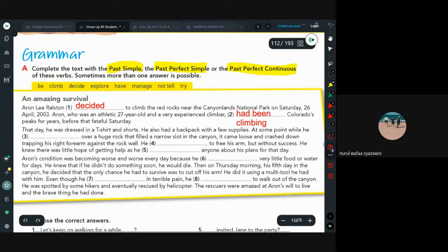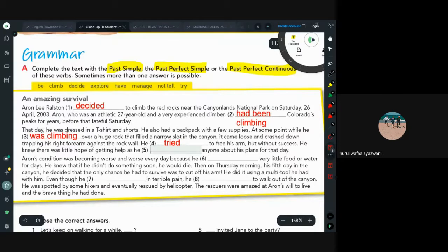That day he was dressed in a t-shirt and shorts. He also had a backpack with a few supplies. At some point while he was climbing over a huge rock that filled a narrow slide in the canyon, it came loose and crashed down, trapping his right forearm against the rock wall. He tried to free his arm but without success. He knew there was little hope of getting help as he didn't tell anyone about his plans for that day.